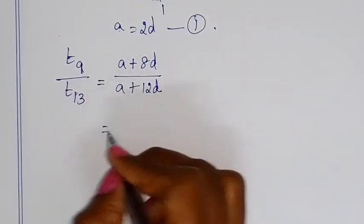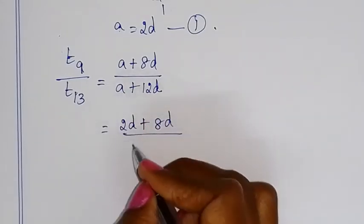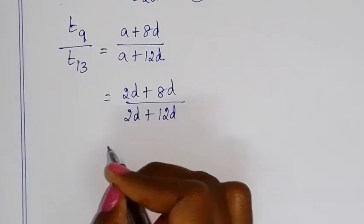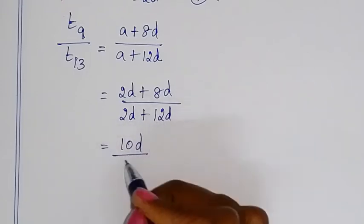T9 by T13 equals (A + 8D) by (A + 12D), which equals (2D + 8D) by (2D + 12D), equals 10D by 14D.